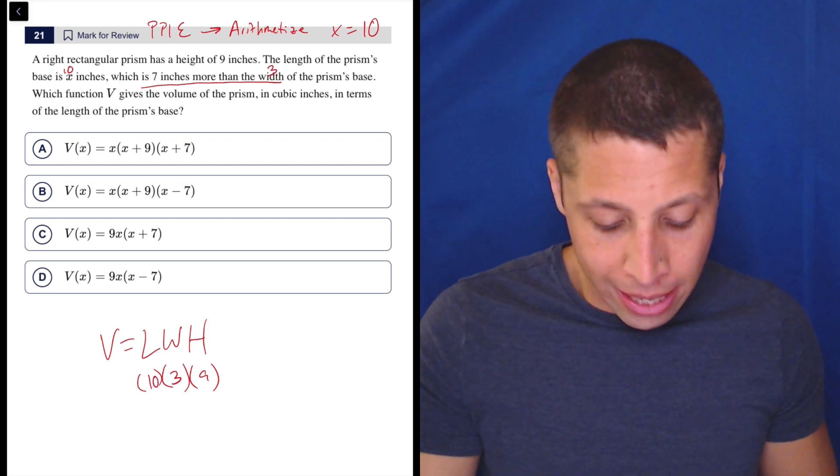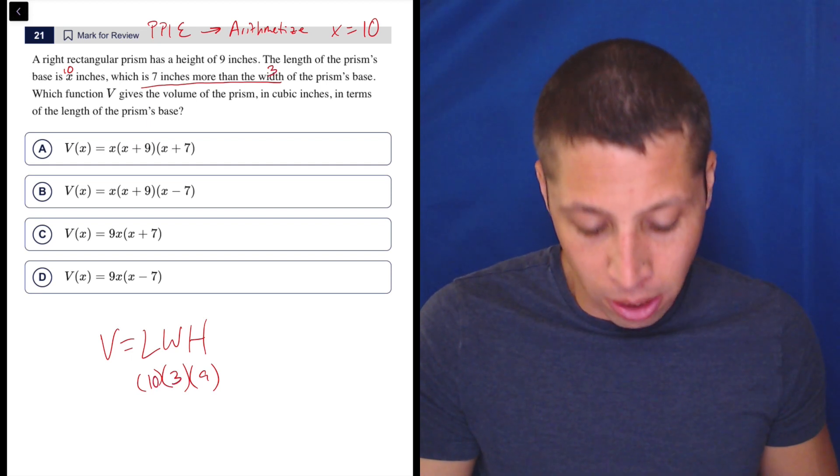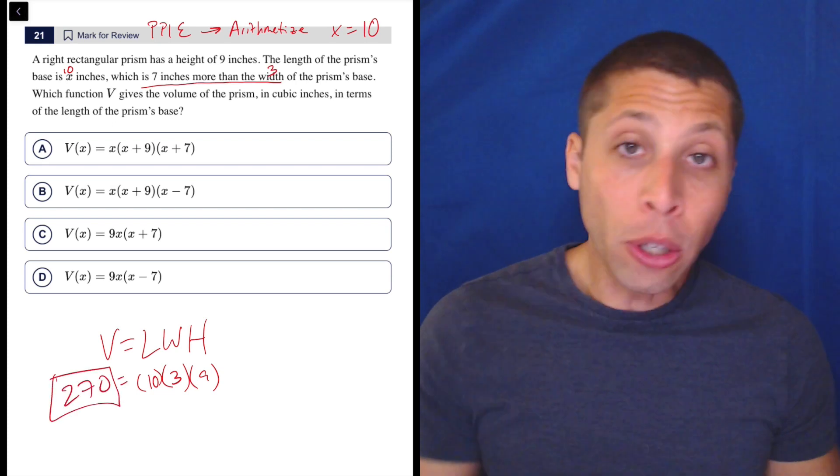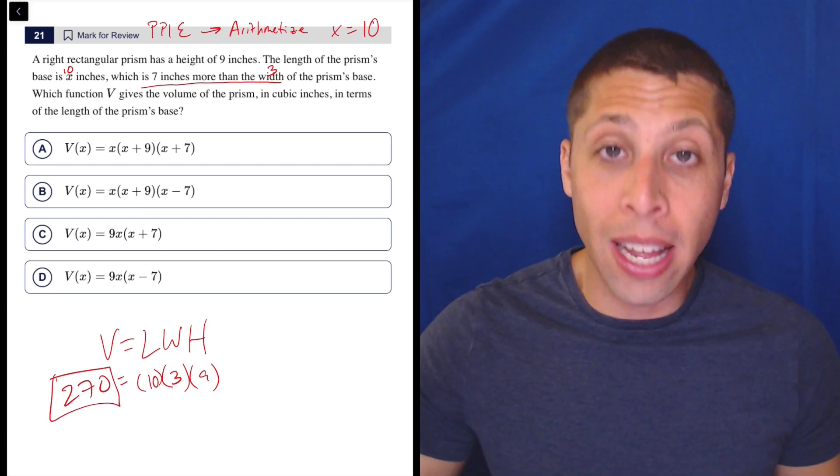So we can adjust my equation here. And now it's just, okay, 10 times three is 30, 30 times nine is 270. So that's my answer. And what I'm looking for then is the equation that produces that same exact answer.